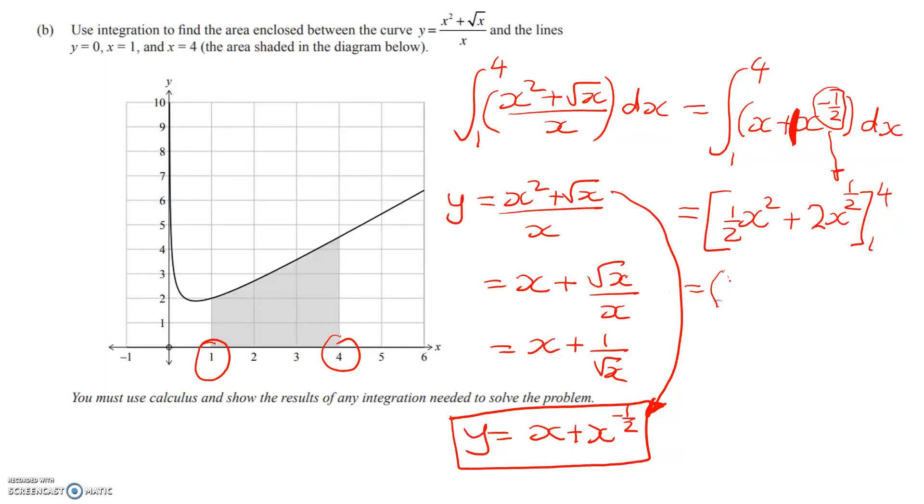So now we're going to evaluate it. We'll get a half times 4 squared plus 2 times root 4, take away a half times 1 squared plus 2 root 1. So all of that gives me 8 plus 2 times 2 are 4, 8 plus 4 minus a half minus 2. And that gives me 9 and a half for my answer.